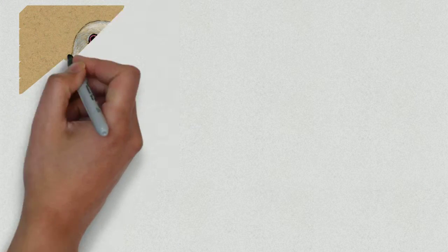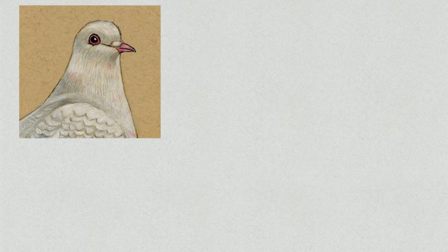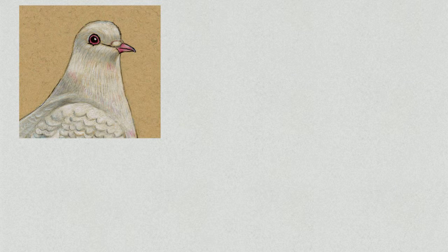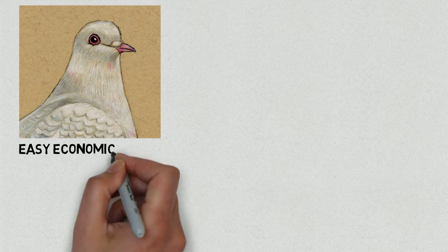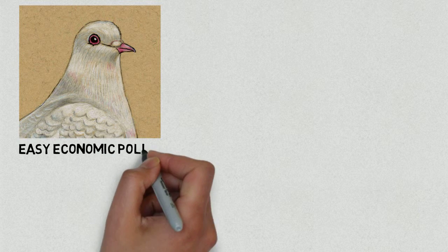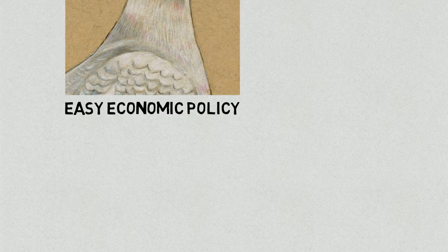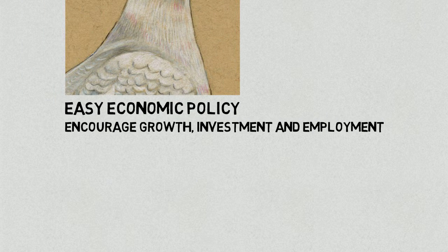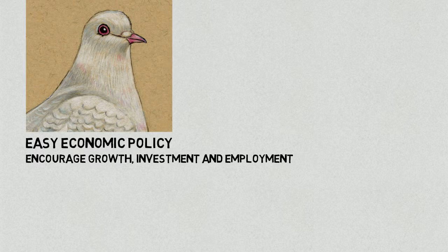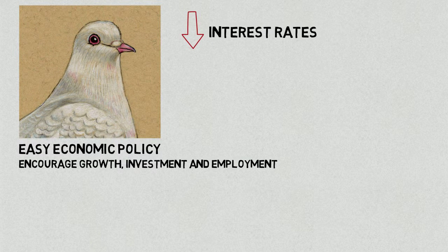Now we come to the other case: the dove. So what is a dove? A dove is a symbol of peace and reminds people of something docile and placid. Consequently, central banks and governments that deploy easy economic policy as a means of encouraging growth, investment and employment, are named after this graceful bird.